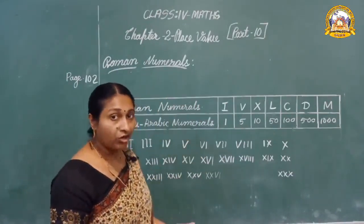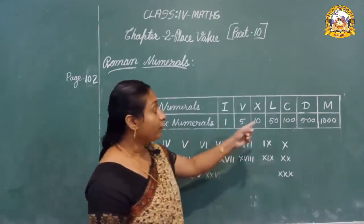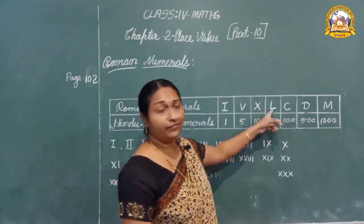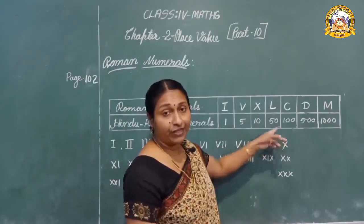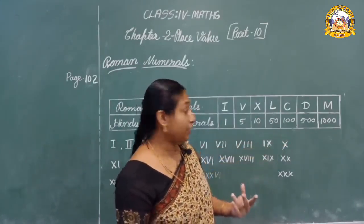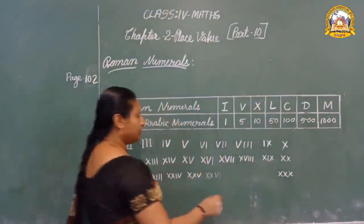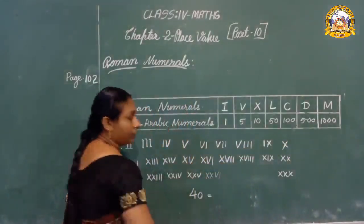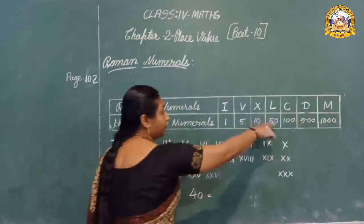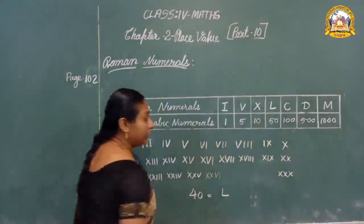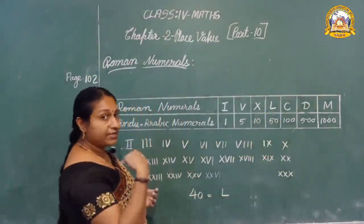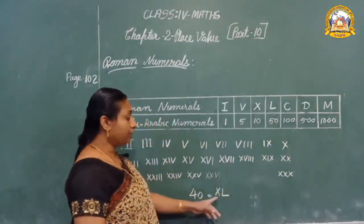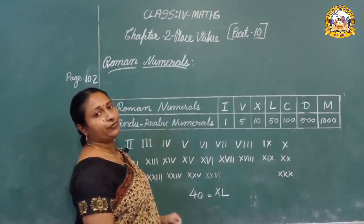Then forty: fifty means L. Forty means fifty minus ten, so before L we give X — that is XL for forty. Then for sixty: write L, then fifty plus ten. So after L we give X — LX. That is sixty.